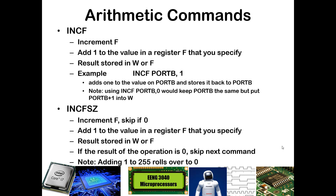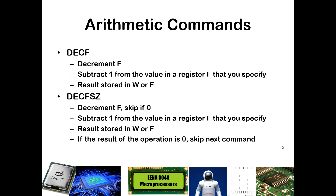You can also do an INCFSZ port B comma 1, which will not only increment the value, but if you increment and actually overflow — going from 255 to 256 — then you can actually skip the very next line of code. This is useful for creating loops. You can also decrement a value and use DECFSZ so that if you get all the way down to 0, you skip the next line. These results can be stored in W or into the register itself.